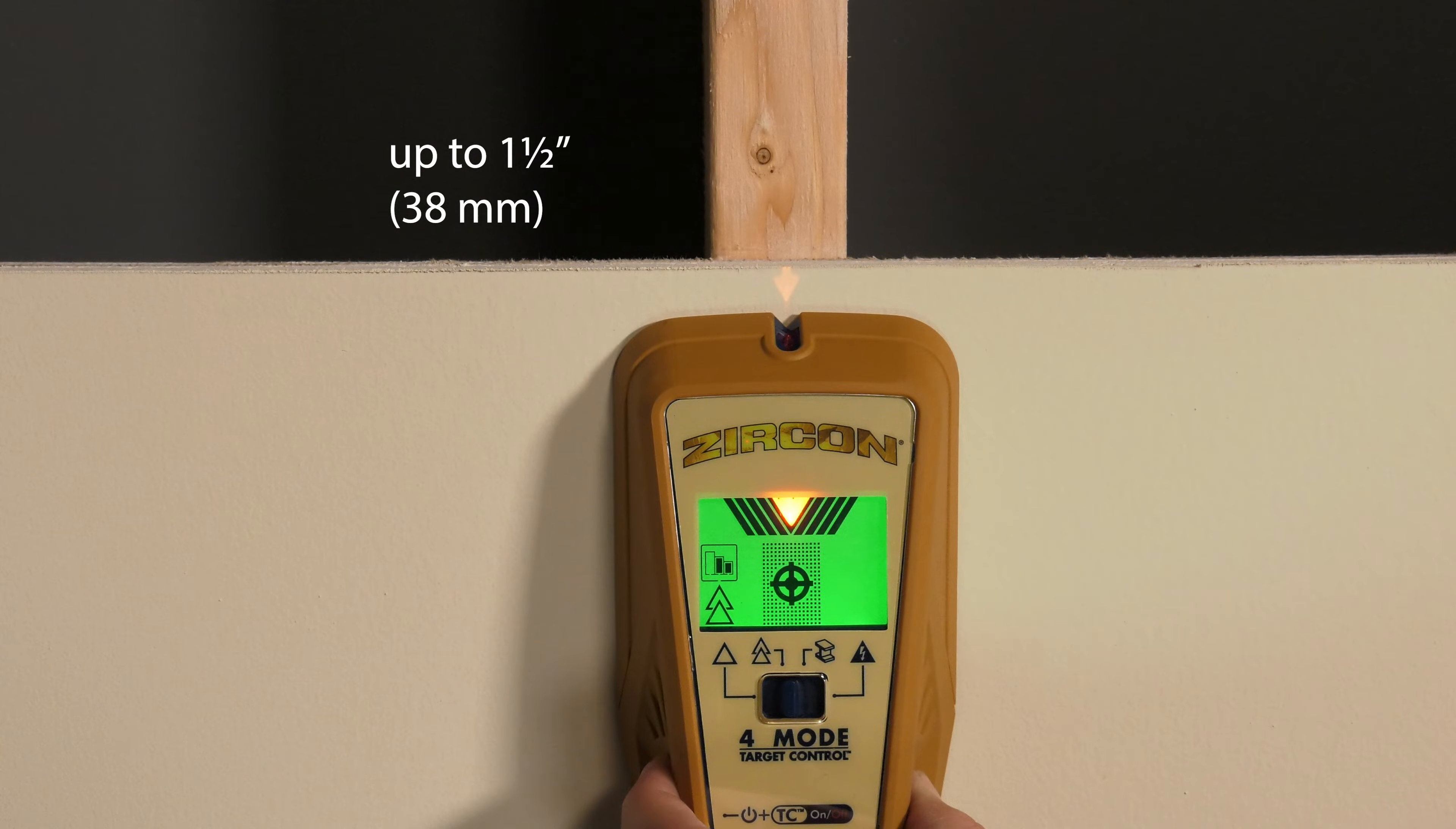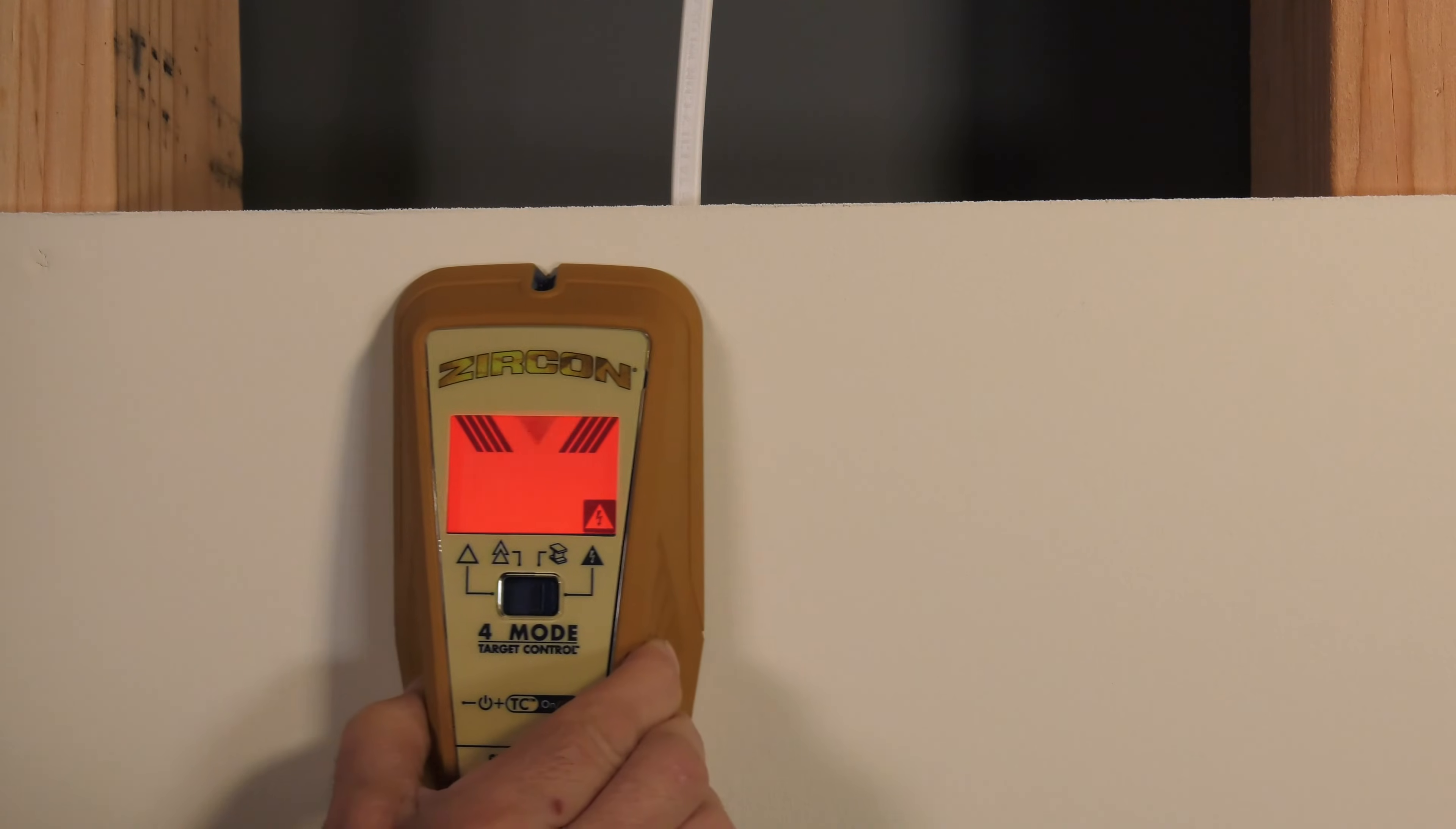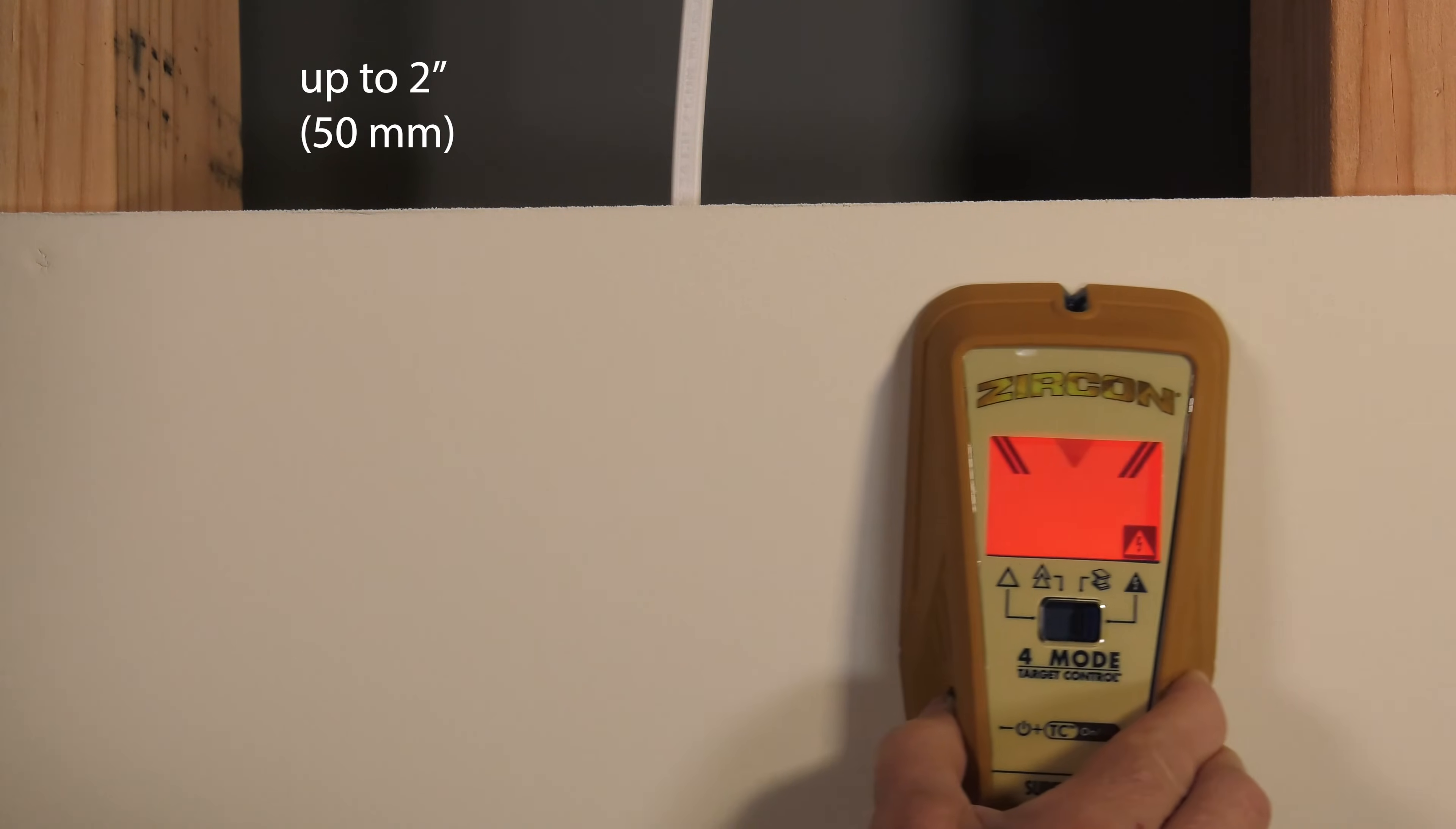MetalScan to find ferrous metal, up to 3 inches deep, and ACScan to find live, unshielded AC electricity, up to 2 inches deep.